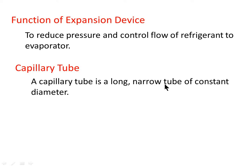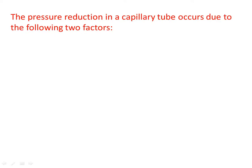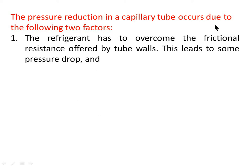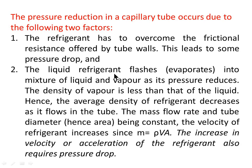A capillary tube is a long narrow tube of constant diameter. Pressure reduction in a capillary tube occurs due to two factors. First, the refrigerant must overcome the frictional resistance offered by the tube walls, causing a pressure drop. Second, the liquid refrigerant flashes into a mixture of liquid and vapor as its pressure reduces. Since vapor density is less than liquid density, average density decreases as refrigerant flows through the tube. With mass flow rate and diameter being constant, velocity increases, and since m = ρvA, this acceleration also requires a pressure drop.